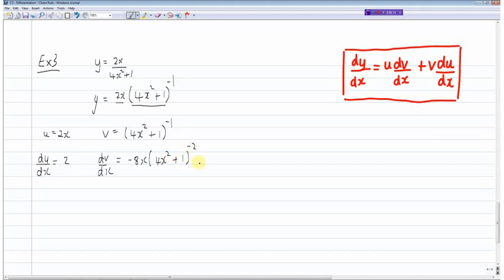Okay, so now it's just a matter of using the formula. dy/dx is equal to u multiplied by dv/dx, or sorry I'll start to be consistent with this formula here, minus 8x(4x² + 1) to the power of minus 2 multiplied by 2x. So this is this bit here.